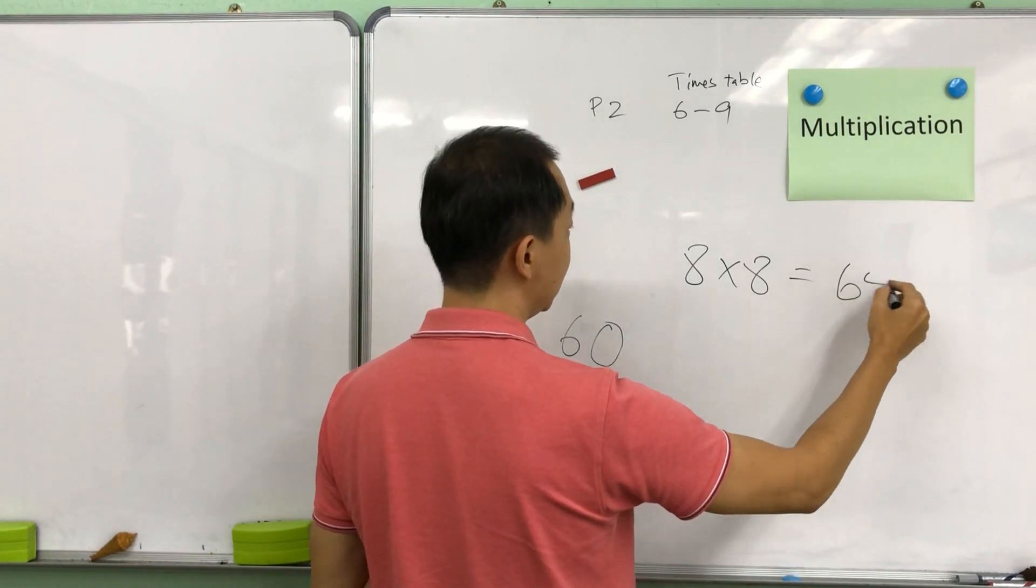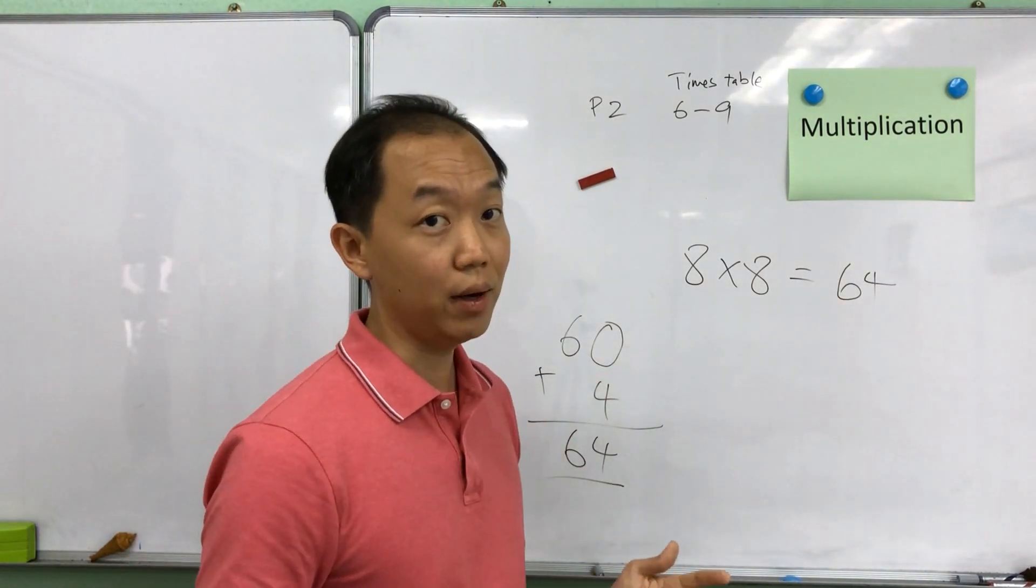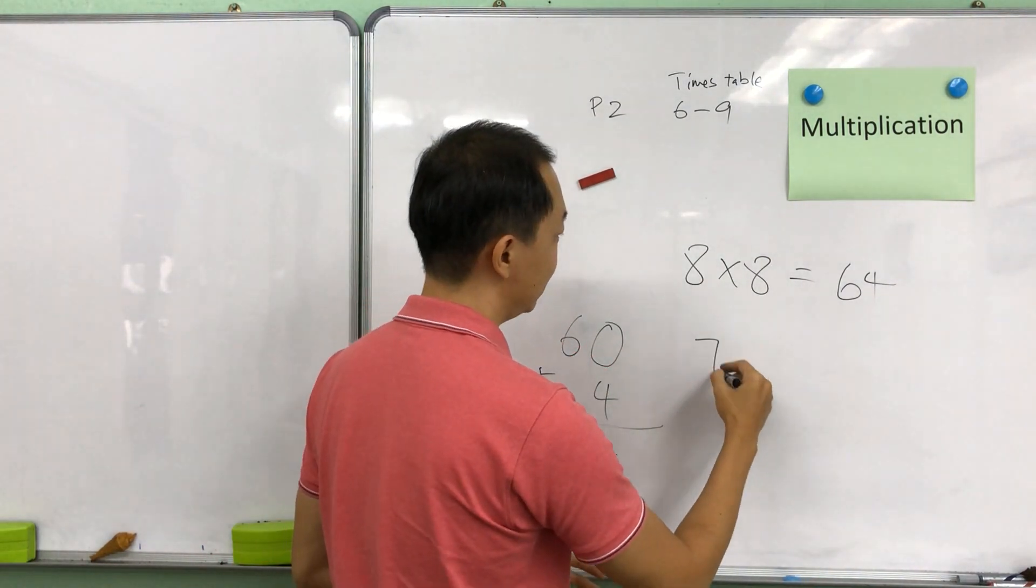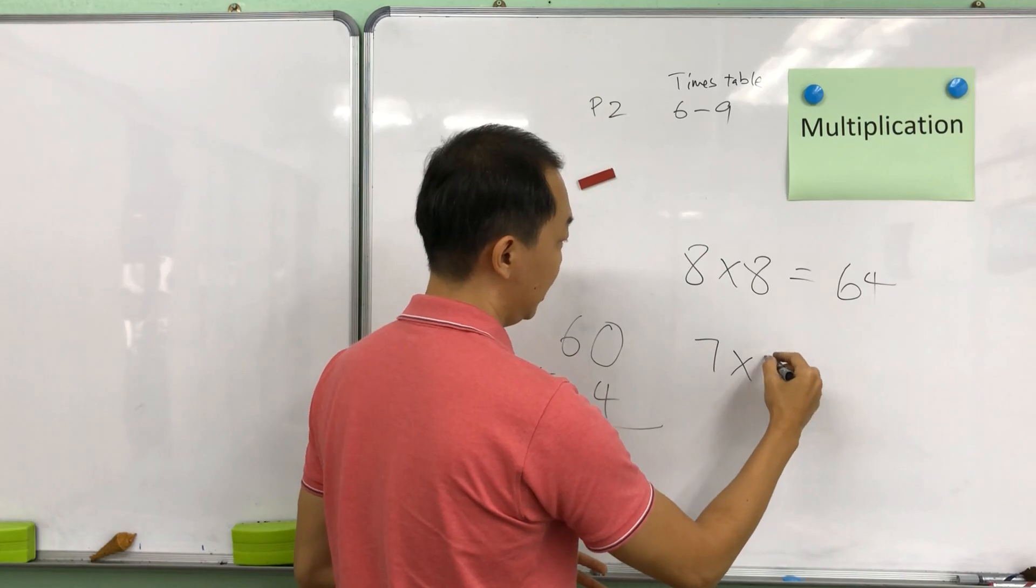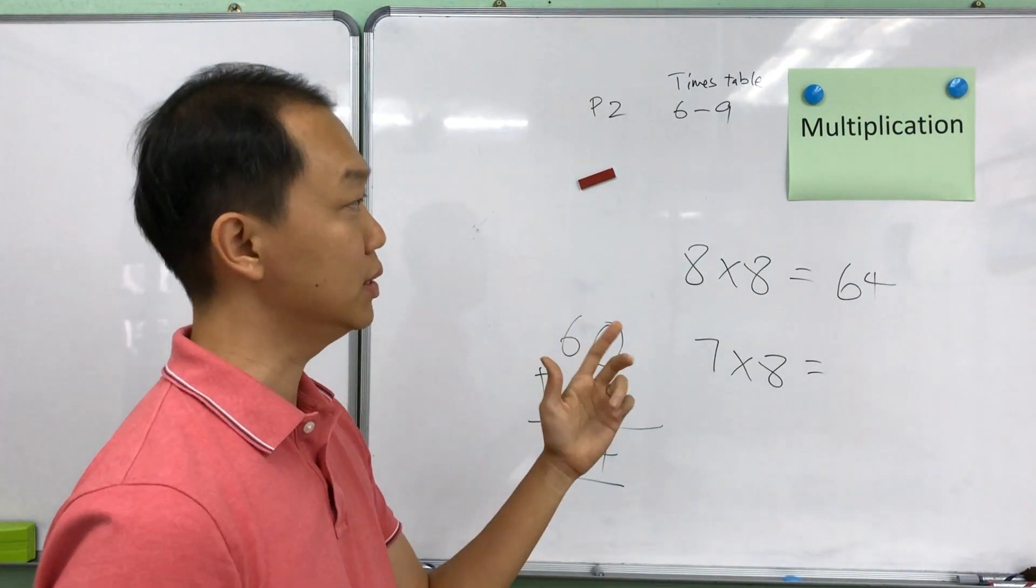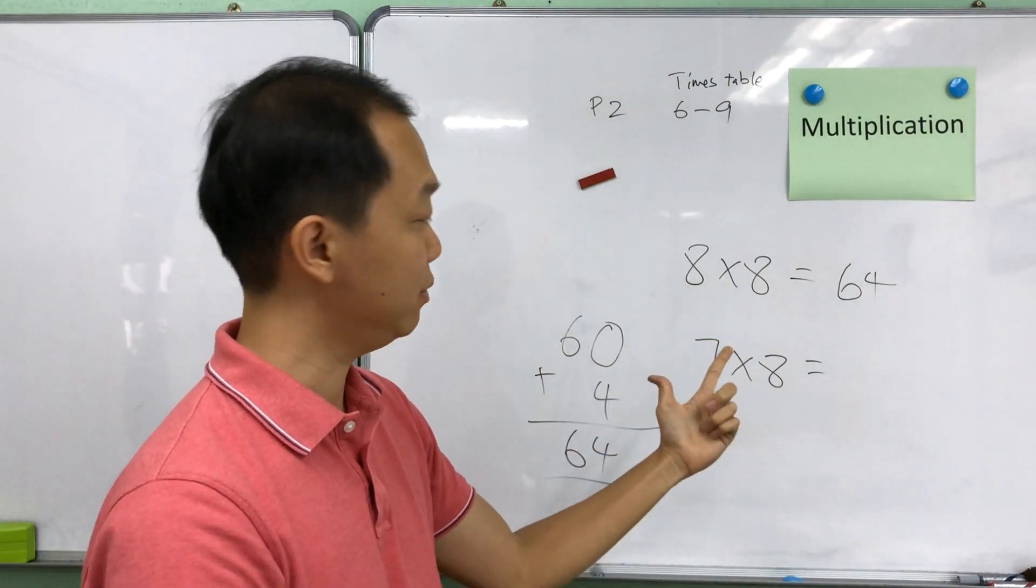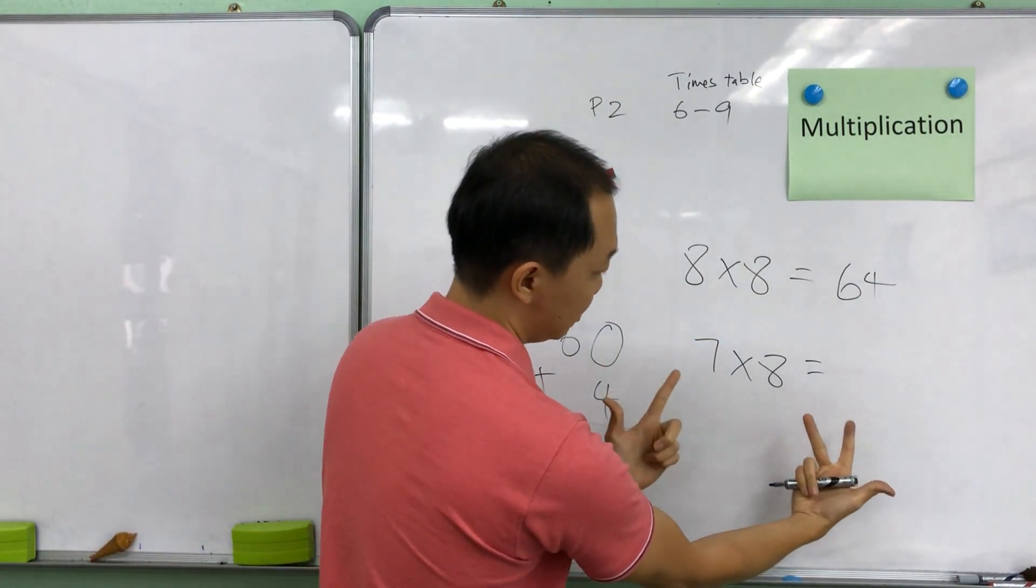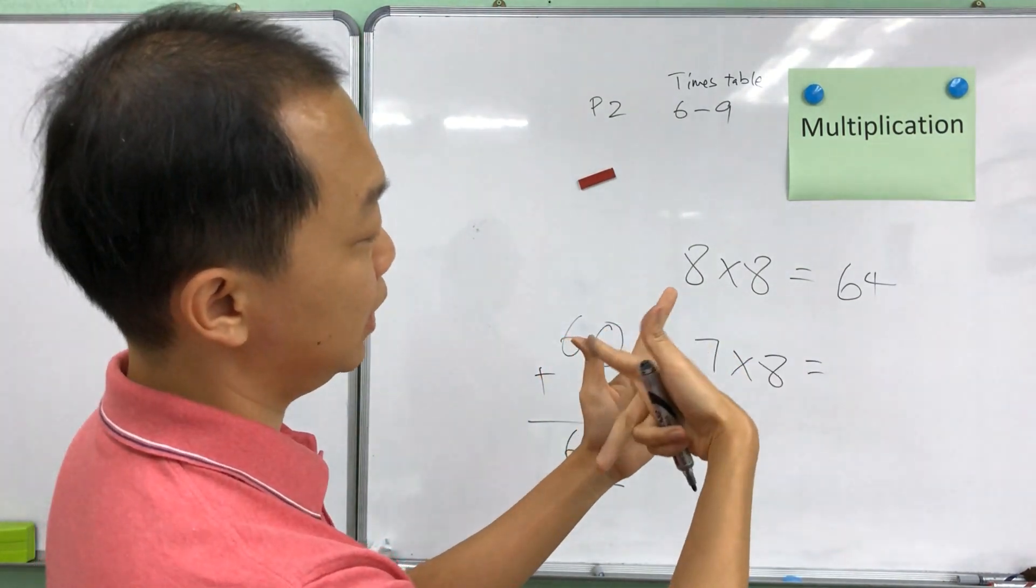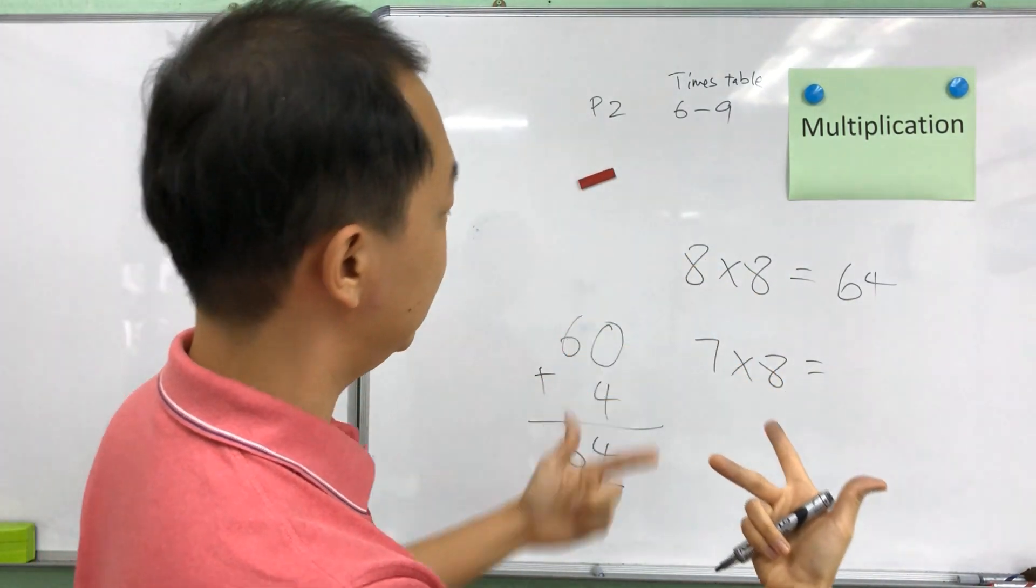So the answer for 8 times 8 is 64. So let's try another one to make sure that you know what I'm talking about. Let's try 7 times 8. So what is 7 times 8? So this is 7 on the left and then times 8, 8 on the right like that. So how many fingers are pointing up? 10, 20, 30, 40, 50.